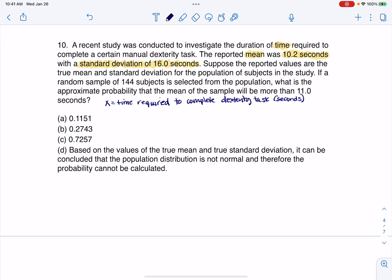And my units look to be in seconds. At this point, I'm going to say that X is distributed - I'm going to put a question mark. I haven't seen anything about a normal distribution, but I want to keep this in mind. I know that the mean was 10.2 and the standard deviation was 16. For me personally, especially with problems where there's a lot of wording, I tend to go a sentence at a time and write down what I know. So this is what I know so far. It says, suppose the reported values are the true mean and standard deviation for the population. Great.